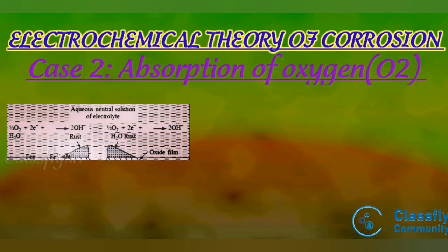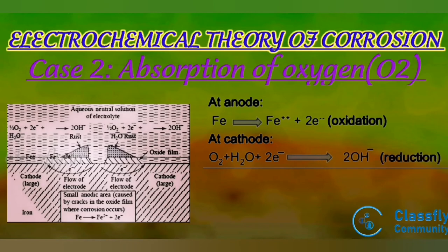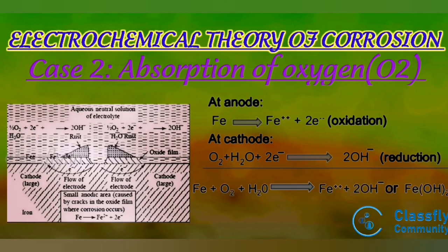Case 2 is absorption of oxygen. This type of corrosion takes place in a neutral or basic medium in the presence of oxygen. A small scratch on the surface creates a small anodic area and the rest of the surface acts as the cathodic area. At the anode: Fe → Fe²⁺ + 2e⁻ (oxidation). At the cathode: O₂ + H₂O + 2e⁻ → 2OH⁻ (reduction). The overall reaction is: Fe + O₂ + H₂O → Fe²⁺ + 2OH⁻, or Fe(OH)₂.